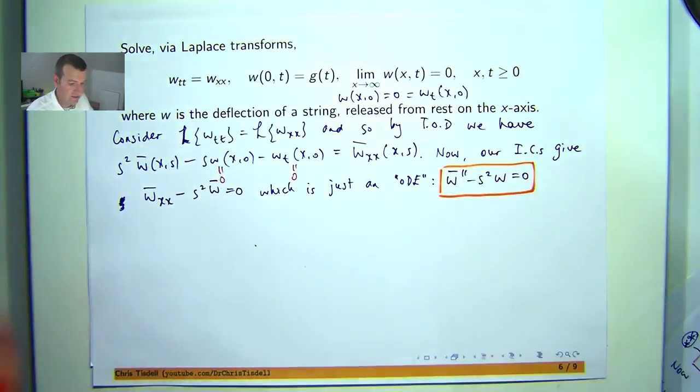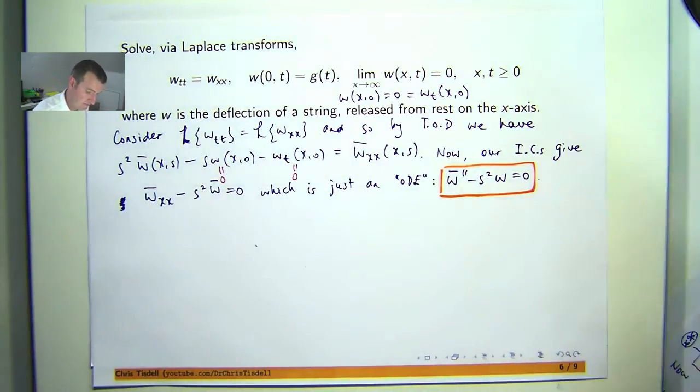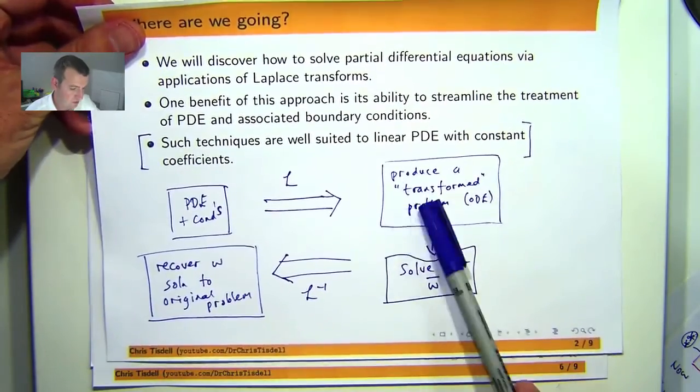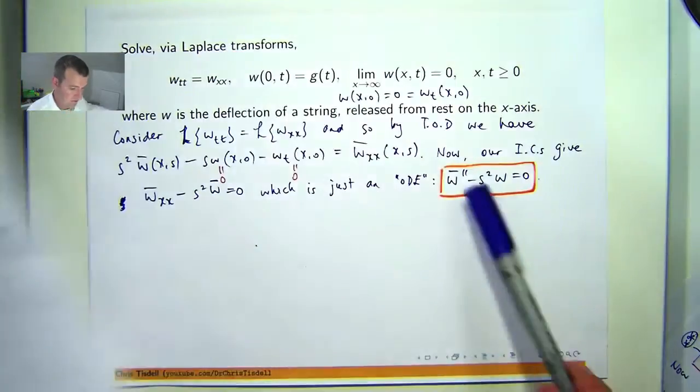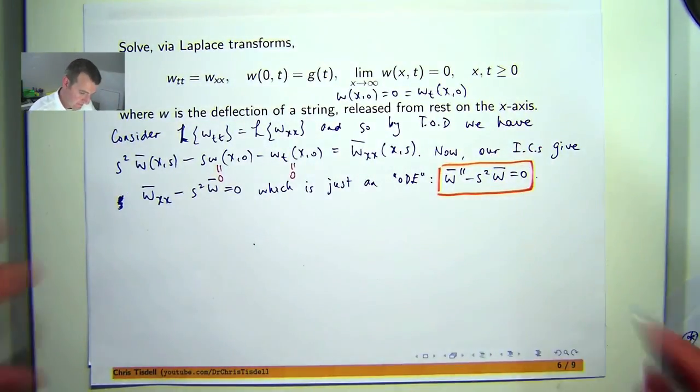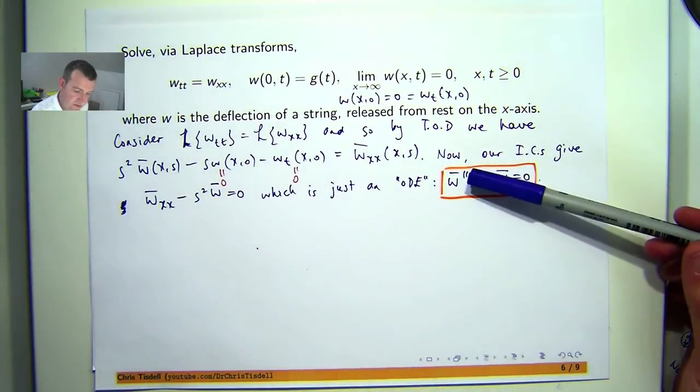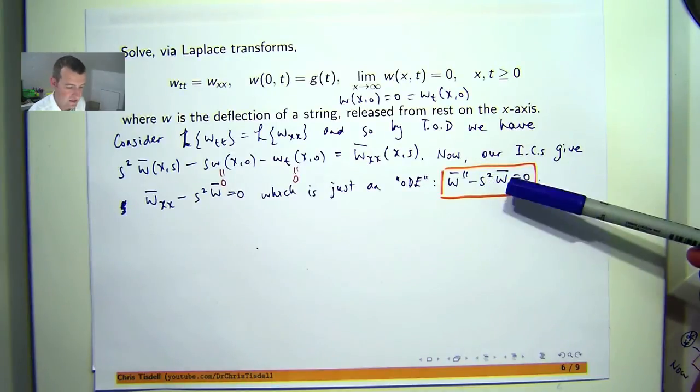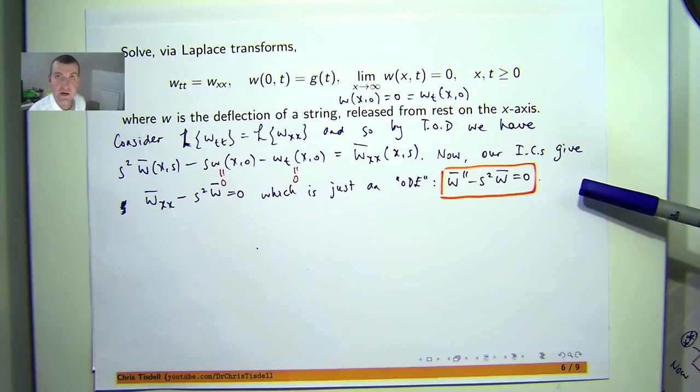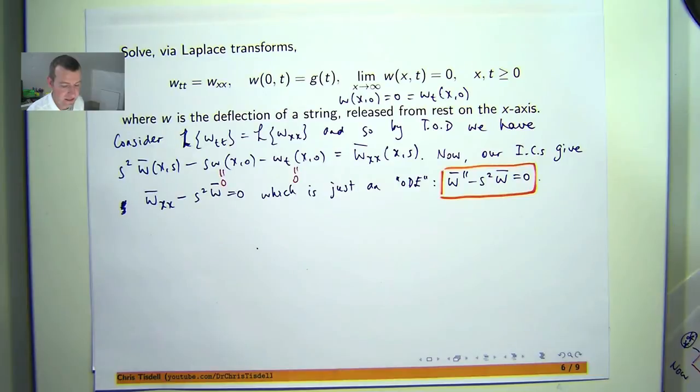So now we have a PDE where only one derivative is present, the second order derivative, and so really this is just an ODE. The double dashes here means differentiation twice with respect to x. We have essentially produced a transform problem which is an ODE. We want to solve now for W bar. Remember the differentiation is with respect to x, so we can assume that the s here is a constant. Solving this is achievable via the solution methods for second order homogeneous ODEs with constant coefficients.